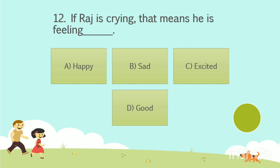Question No. 12: If Raj is crying, that means he is feeling ___. Option A: Happy. Option B: Sad. Option C: Excited. Option D: Good. Your time starts now. The answer is Option B: Sad.